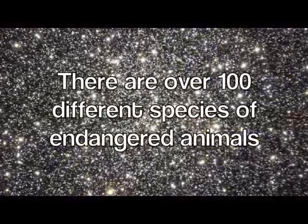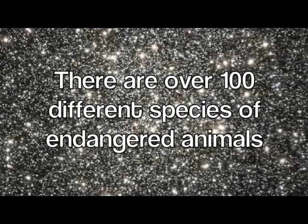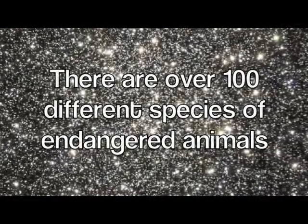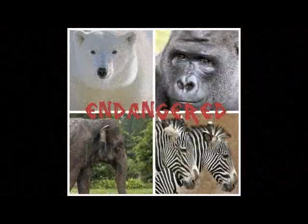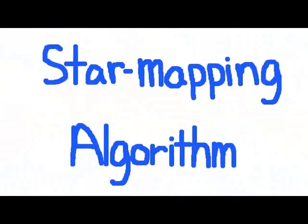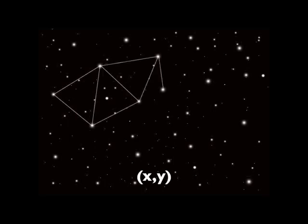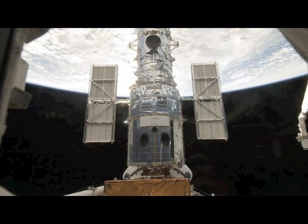On Earth, there are over 100 different species of endangered animals, some of which have unique spot patterns. We can use the same NASA technology used to map stars to track endangered animals, called algorithms. An algorithm is a process in which triangles are formed with stars at the vertices, and each star is represented as an XY coordinate. It matches and compares star configurations within the Hubble Telescope's images.